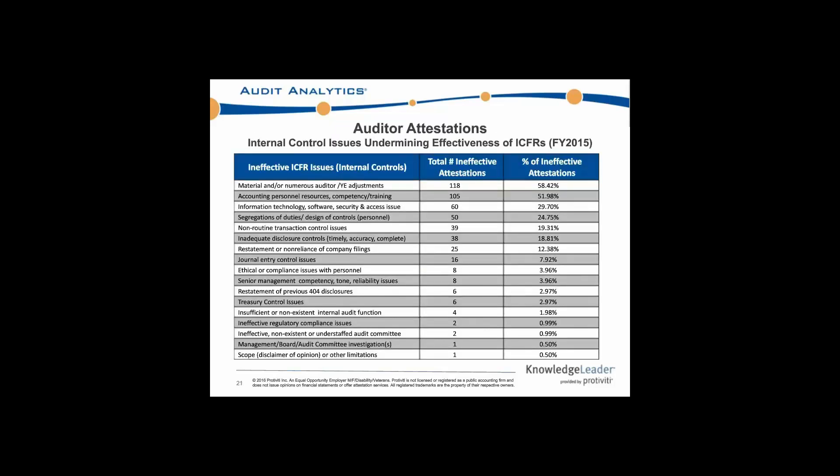Right here we have all of the issues that we tracked for fiscal year 2015, attached in terms of internal control issues undermining the effectiveness of ICFRs. This breaks it out in much more detail than the top five and includes percentages. As I mentioned, material and/or numerous year-end adjustments accounted for 58% of these auditor attestations for the ineffective controls, and so on down the line.